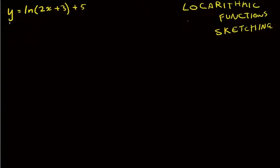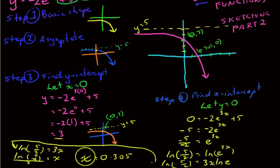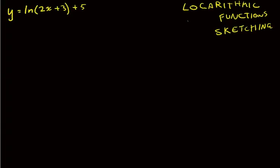You would have sketched exponential functions before, something like this. Step 1 was find the basic shape, step 2 was the asymptote, step 3 was find the y-intercept, and step 4 was either find a significant point or an x-intercept. We're going to follow this pretty closely, but there's going to be some surprises along the way, just some different ways of doing things. But the basic idea is still the same.